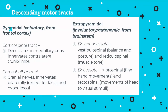A quick reminder that your descending motor tracts are your pyramidal system, responsible for voluntary movement through your corticospinal and corticobulbar tracts — corticospinal for limbs and trunk, corticobulbar for cranial nerves. Then you've got your extrapyramidal tracts, which are what we're focusing on today, coming from the brainstem, particularly from the basal ganglia, responsible for involuntary and autonomic movements.